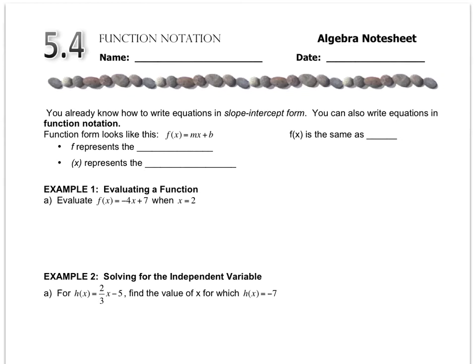In math, we have this special notation called function notation, and it's a more advanced way of writing the equations that we've been dealing with. We already know y equals mx plus b, but now I want to write it as f of x equals mx plus b. The way that we read this is we say f of x equals mx plus b. f of x is the same as saying y, so y equals mx plus b is the same.